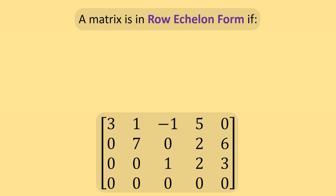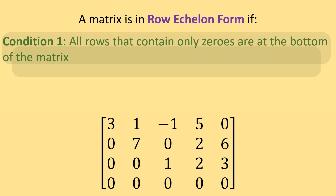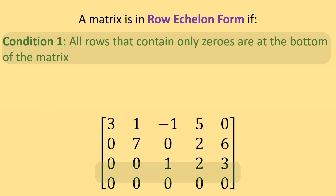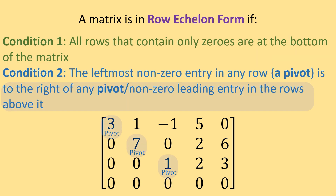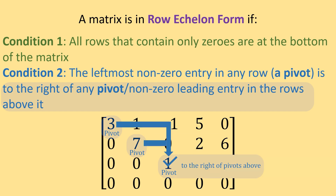A matrix is in row echelon form if all rows that contain only zeros are at the bottom of the matrix. Also, the leftmost non-zero entry in any row, which we call the pivot, is to the right of every pivot in the rows above it.